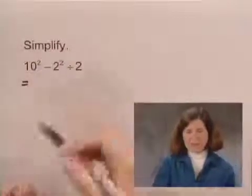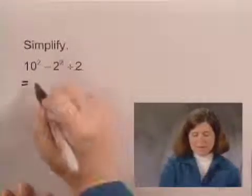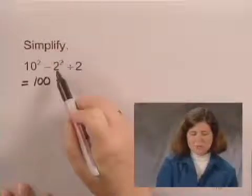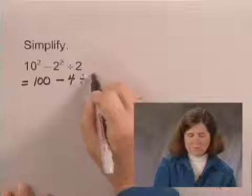I'm also going to continue to write down the rest of the expression as well. So, 10 to the second power is 100 minus 2 to the second power is 4 divided by 2.